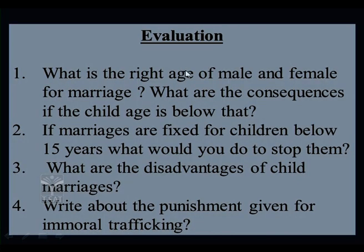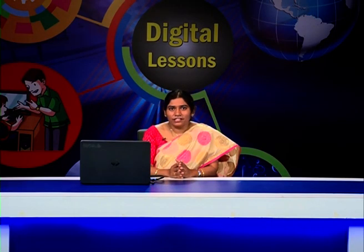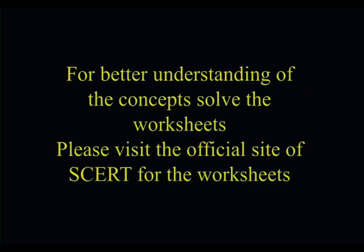So that they can grow in their life and lead a happy and successful life. With this I would like to end the session. Let us go to the evaluation part. The first question is: what is the right age of male and female for marriage, and what are the consequences if the child's age is below that? The second question is: if marriages are fixed for children below 15 years, what would you do to stop them? The third is: what are the disadvantages of child marriages? The fourth is: write about the punishments given for immoral trafficking. Try to answer all these questions, write them in your notebooks, and show your teachers. Let us meet in the next session with more interesting concepts of Women Protection Acts. For better understanding, please visit the official site of SCERT for the worksheets. Thank you children.